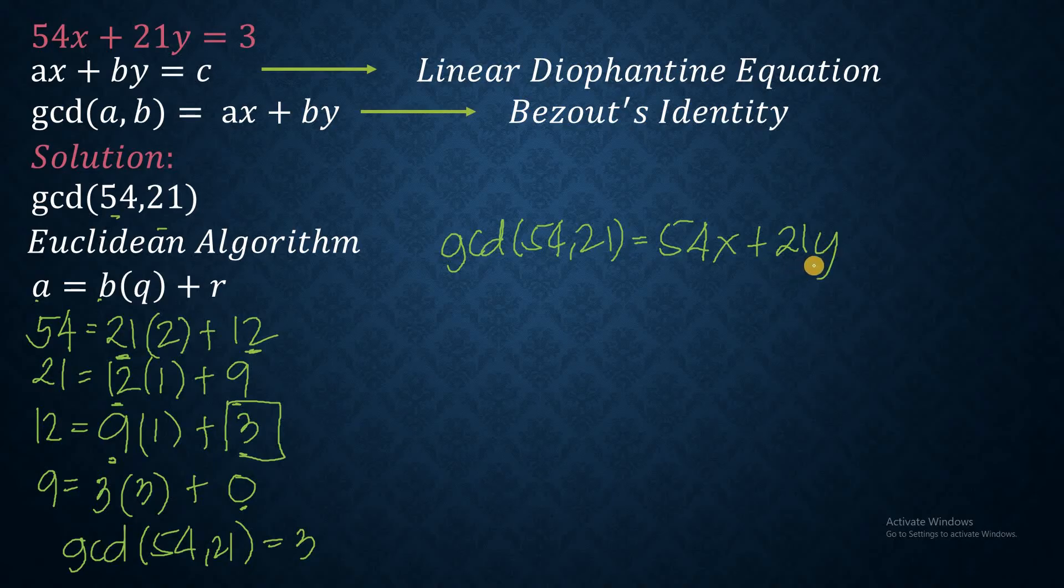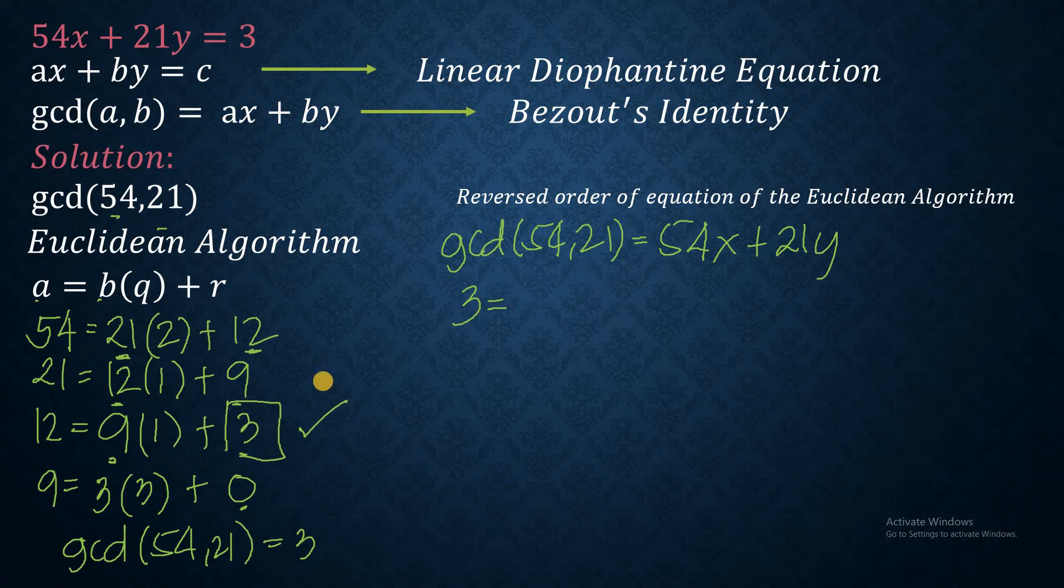To solve for that, we now take the reverse order of equation of this Euclidean algorithm. So we start with this equation. So this is now the GCD of 54 and 21, which is 3. That would be our left side. It's now equal to, we define 3 such that 3 is now equal to 12 minus 9. So that's 12 minus 9. And then the next order is this one, meaning we define 9 as 21 minus 12. So we put it in this equation. So we have 3 is equal to 12, and 9 is defined as 21 minus 12.